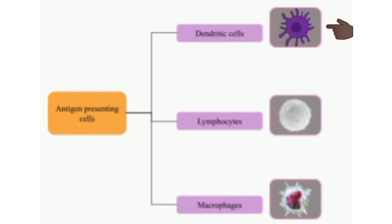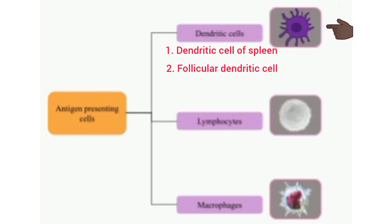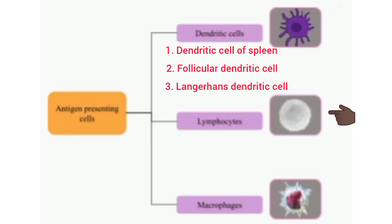Based on their location, dendritic cells are classified into three types: dendritic cells of the spleen which trap antigens in the blood; follicular dendritic cells in lymphoid tissues which trap antigens in the lymph; and Langerhans dendritic cells in the skin which trap organisms coming in contact with the body surface. B lymphocytes also act as antigen-presenting cells, functioning as both antigen-presenting and antigen-receiving cells.